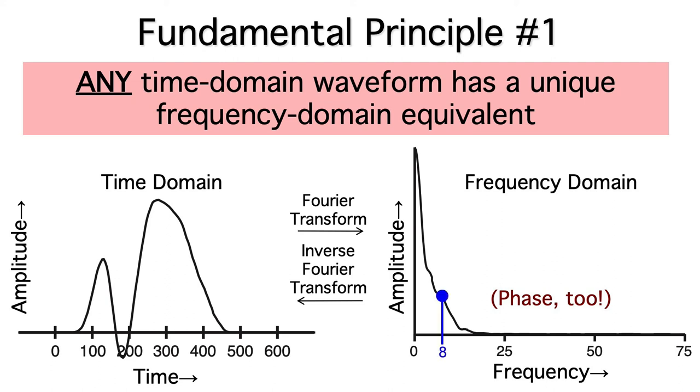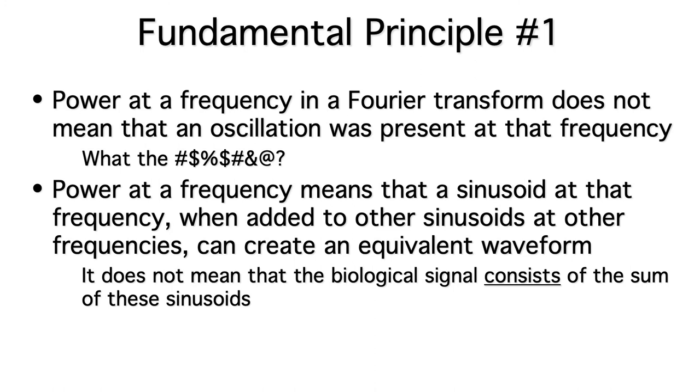For example, the fact that we have a certain amplitude at 8Hz in this Fourier transform doesn't mean that there are 8Hz oscillations in the ERP waveform. I mean, do you see any 8Hz oscillations? So, power at a given frequency in a Fourier transform does not mean that an oscillation was actually present at that frequency.